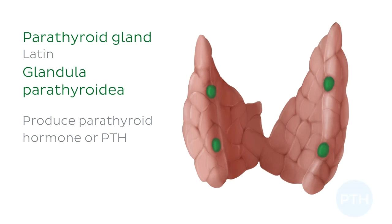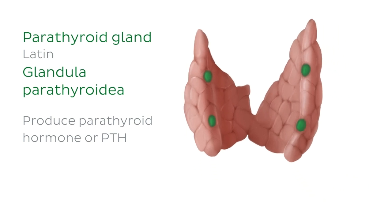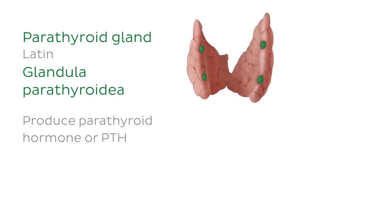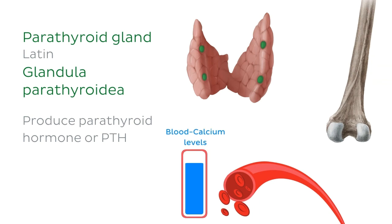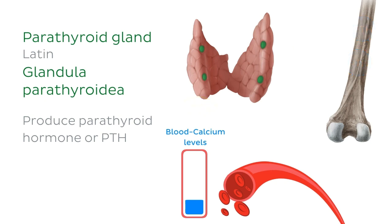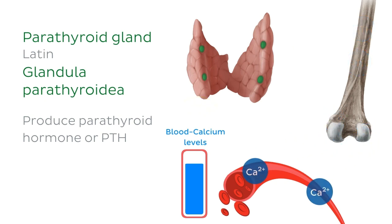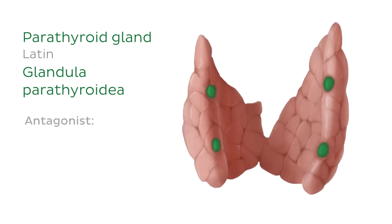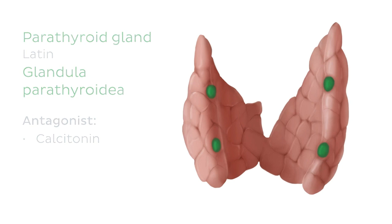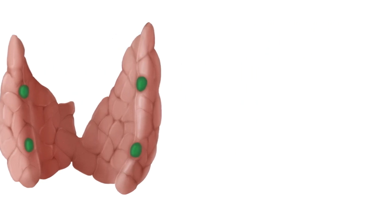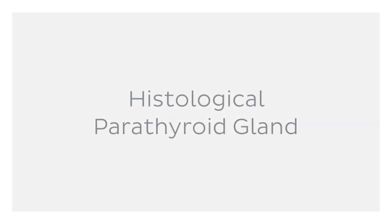PTH plays a role in regulating blood calcium levels. More specifically, when parathyroid cells detect falling calcium levels in the blood, the parathyroid glands synthesize and secrete PTH, which causes bones to release calcium into the blood. The antagonist of this hormone is calcitonin, which reduces blood serum calcium levels. All right, time to get down to the nitty-gritty of what actually makes up the parathyroid gland.